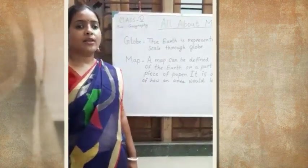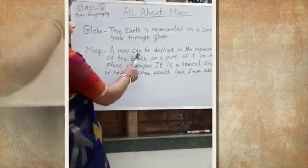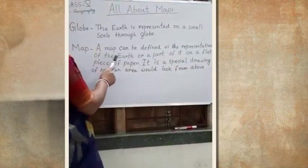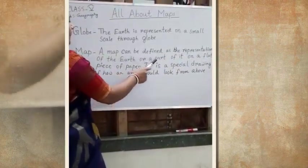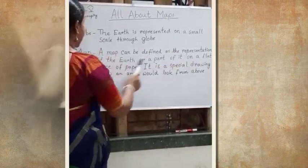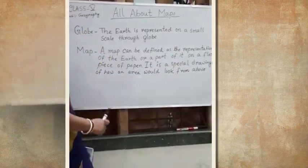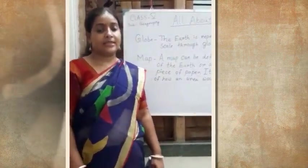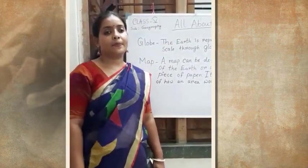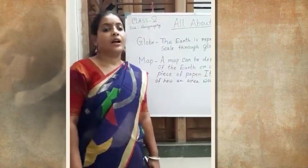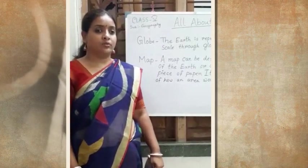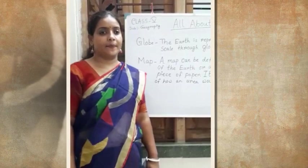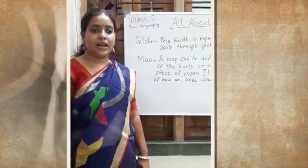Next is what is map? A map can be defined as the representation of the earth or a part of it on a flat piece of paper. The earth fully or a part of it is represented on a flat piece of paper through map. Map can be of the whole earth, that is the map of world, or can be a part of it, for example, map of India, map of Australia.